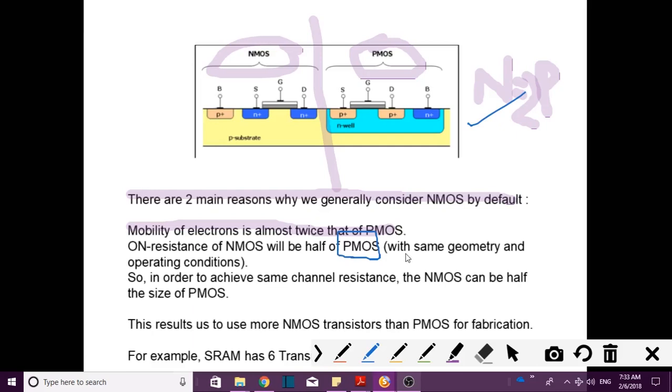So in order to achieve the same channel resistance, NMOS can be half the size of PMOS. So the final result is NMOS will be two times faster than PMOS if it is used. So NMOS will be used as the design for all the ICs.